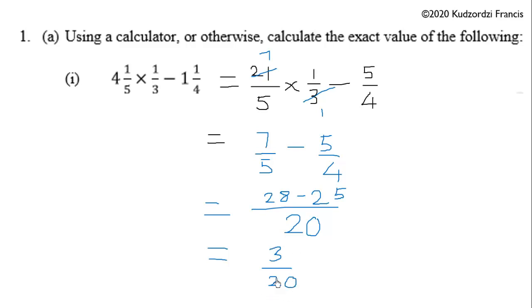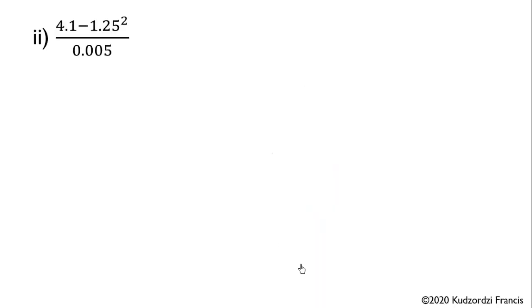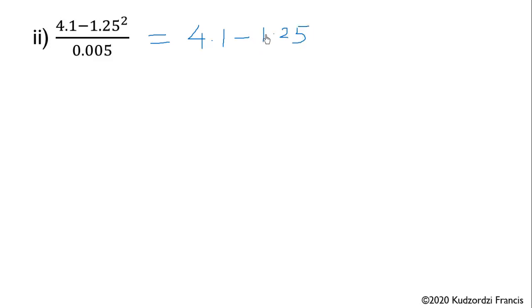The exact value means it should not be in decimal form. Now we have this next part — we still find the exact value. So let us rewrite this as 4.1 minus 1.25 squared, all over 0.005. Now 1.25 squared is the same as 1.25 times 1.25.